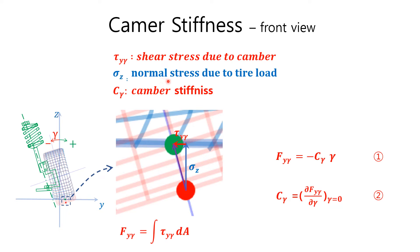I explained the camber thrust with this picture in the previous video E0025. When we have camber thrust due to camber τ sub y-γ, normal thrust due to tire load σ sub c, and camber stiffness C sub γ, the camber thrust F sub y-γ is equal to the integral of τ sub y-γ over the entire area of the tire contact patch. In the lower camber angle range, camber thrust is proportional to the camber angle γ, as described in equation number 1.